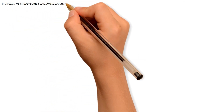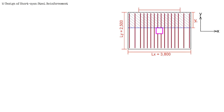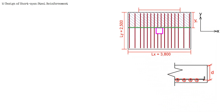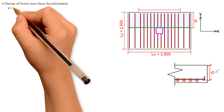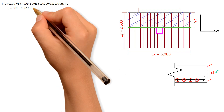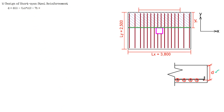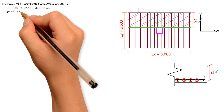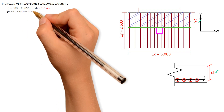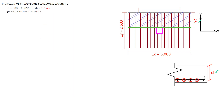Moving on to the design of short-span steel reinforcement. In this diagram, the short-span steel is parallel to the shorter dimension of the footing, and its placement is below the longitudinal steel. Cutting through this section, the effective depth d equals the thickness 600 mm minus 0.5 times the diameter 20 mm minus concrete cover 75 mm, giving 515 mm. Then, y sub c equals Ly 2500 mm divided by 2 minus 0.5 times cy 400 mm, giving 1050 mm.